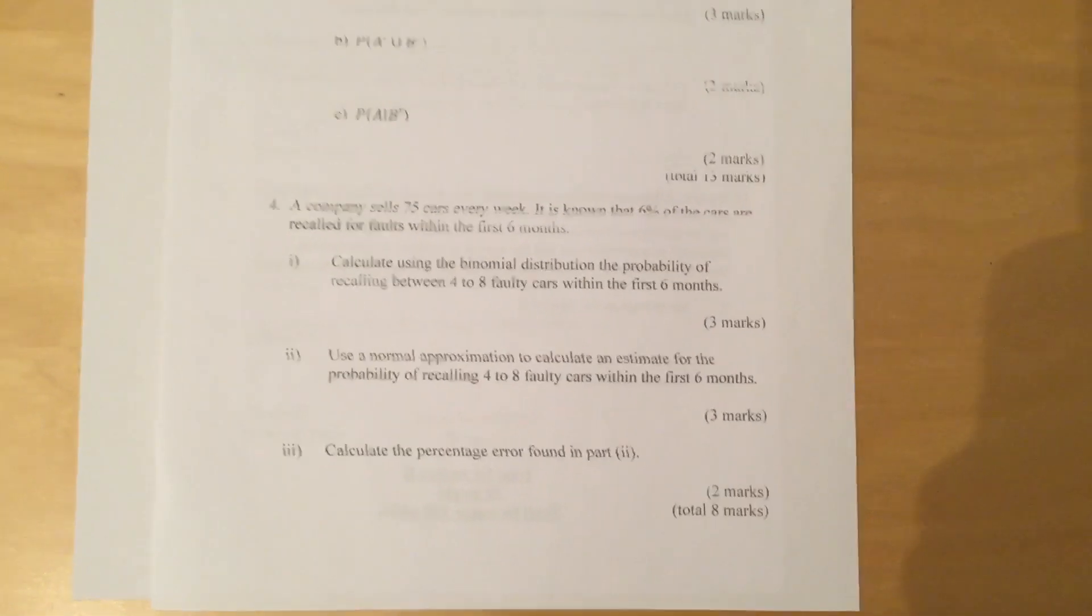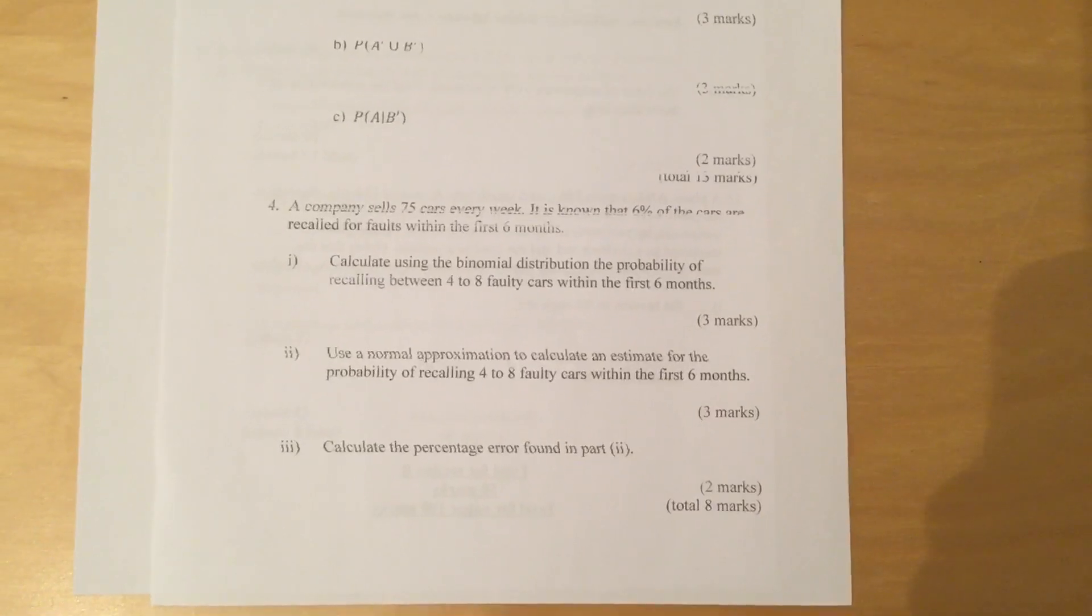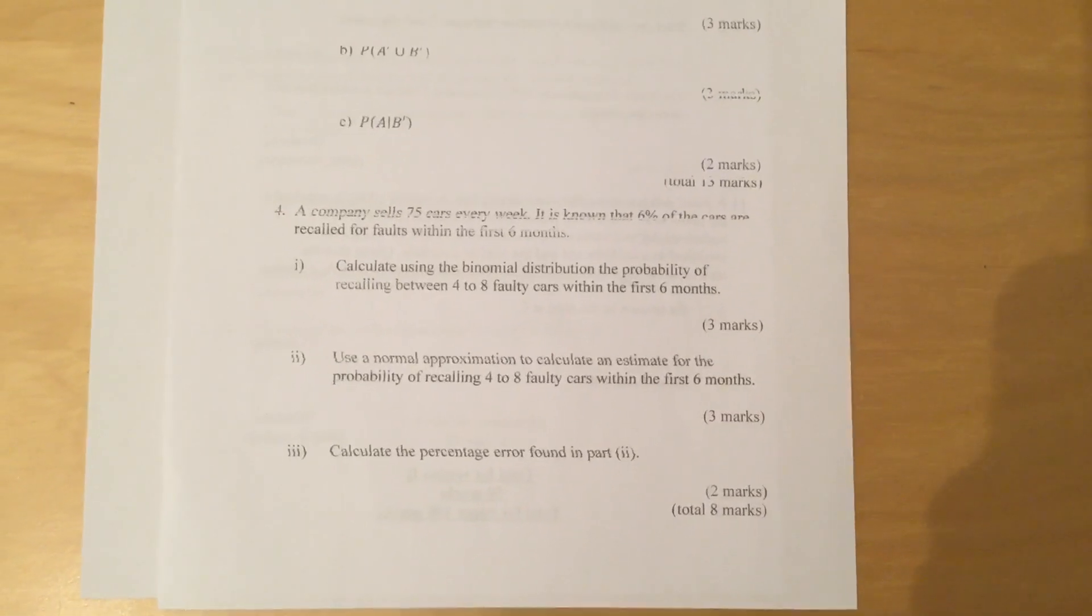Question 4: A company sells 75 cars every week. It is known that 6% of the cars are recalled for faults within the first six months.